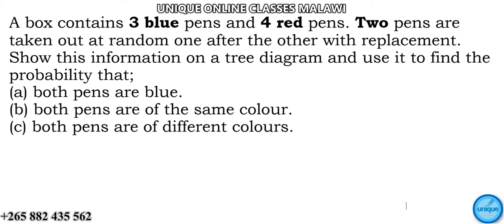A student asked this probability problem from Mathematics Book 4. The question reads: A box contains 3 blue pens and 4 red pens. Two pens are taken out at random, one after the other, with replacement. Show this information on a tree diagram and use it to find the probability that both pens are blue, both pens are of the same color, and both pens are of different colors.